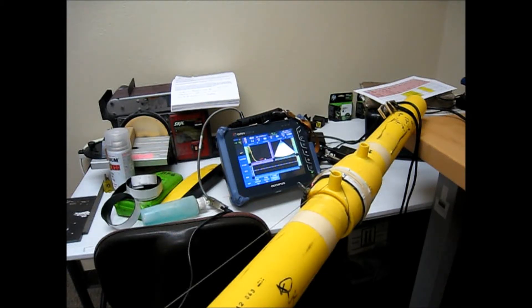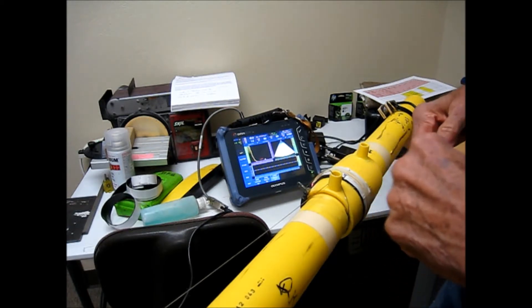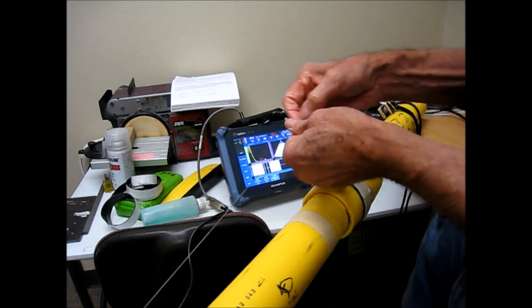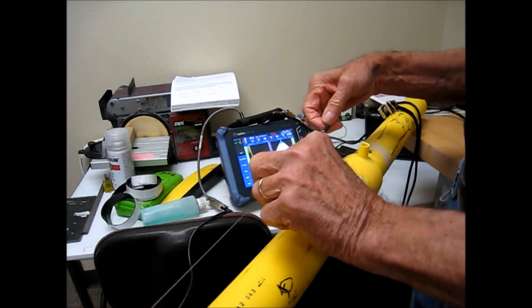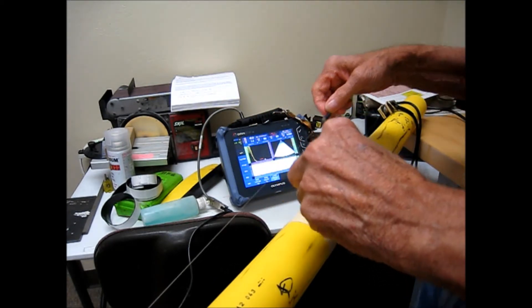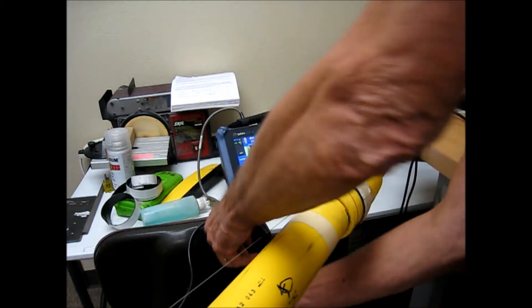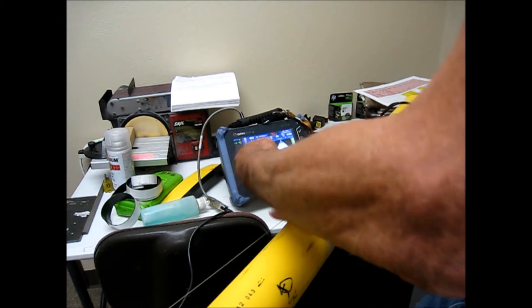Okay, hi. I'm Jimmy Ellis with SGS in Broken Arrow, Oklahoma. I'm going to show you taking a phased array encoded exam. The encoding is how we have this string that pulls out and it can remember how far it's been pulled out. This is how we get the distance information in there. Here's the transducer.